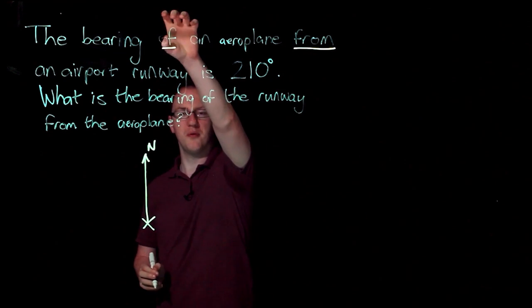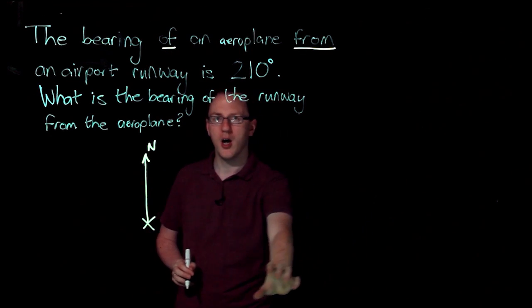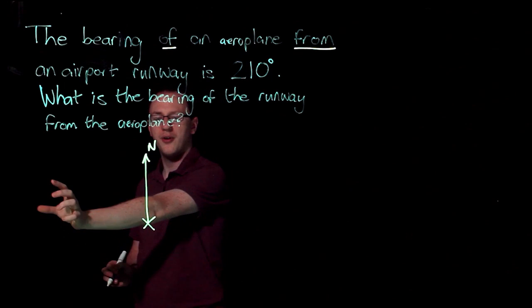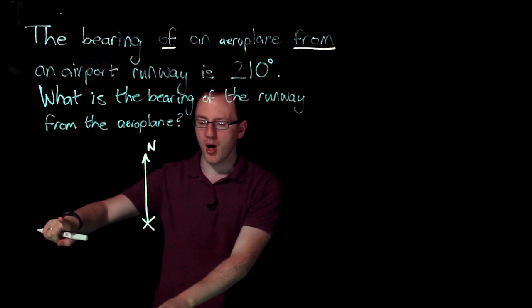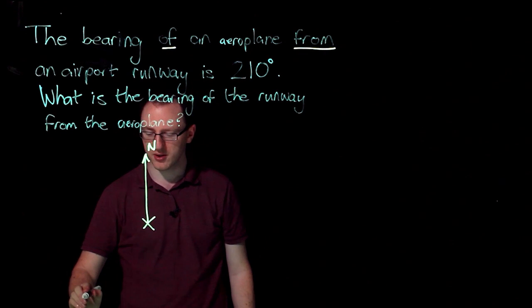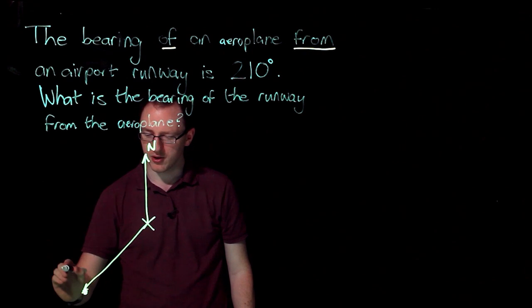Now I know that the bearing of the airplane is 210 degrees. So if the airplane was north it would be zero. If it was over east it would be 90 degrees, 180 degrees, 270 degrees. So it's going to be somewhere between 180 and 270. So it's going to be somewhere over here. So that's where my airplane is going to be.